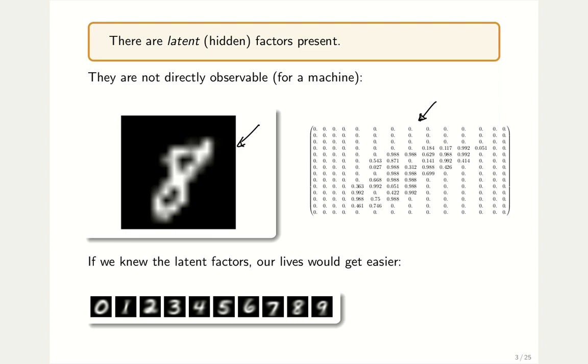The thing is, if we knew these latent factors, our lives would get considerably easier. I've taken the labels and sorted all the samples in the MNIST dataset by their label. Then I took the mean of all zeros, of all ones, of all twos and so on. What you can see is fairly readable means. So if we knew the label data, our life would get much easier. We will need to formalize this concept to do inference and to try to detect these latent factors.